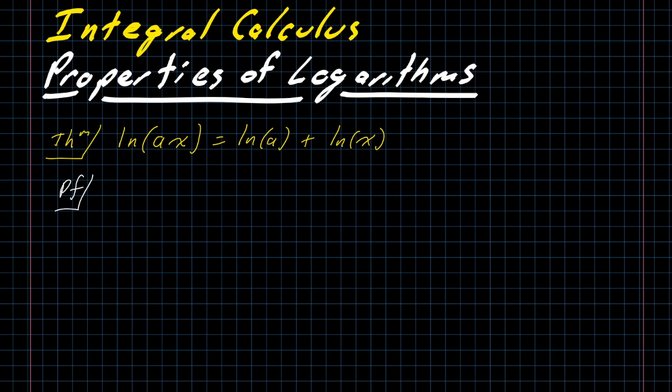I'm going to start by taking the derivative of each side. The derivative of the natural log of ax and the derivative of the natural log of a plus the natural log of x. Well, for the first one, that's actually the harder one, taking the derivative of a natural log. The argument goes in the denominator, ax. The derivative of that argument goes in the numerator. The derivative of ax is a. Then from here, my fraction reduces because there's a factor of a in the numerator and in the denominator, and I get 1 over x.